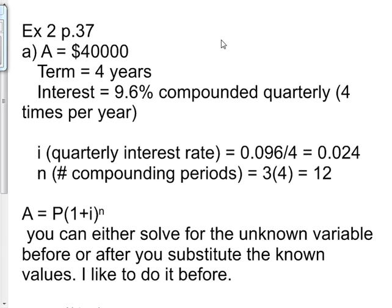Part A asks how much money should they have invested. So A is the future value, they need $40,000 over 4 years. The interest they're earning is 9.6% compounded quarterly or 4 times per year.